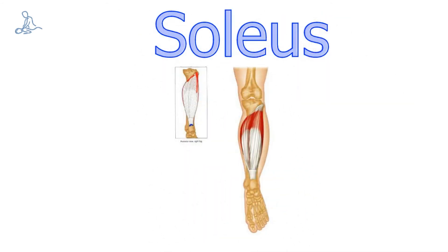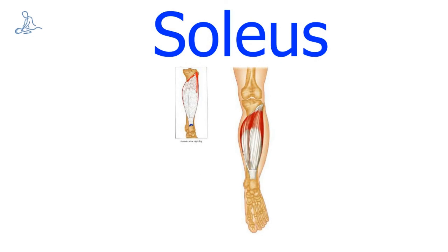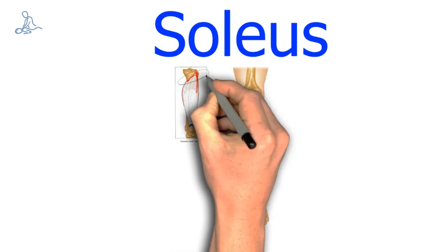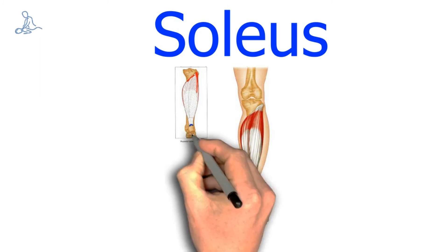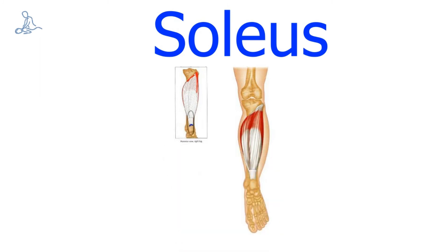Soleus. The origin of the soleus is the superior posterior third of the tibia and fibula. The insertion of the soleus is the calcaneus via the Achilles tendon. The action of the soleus is to plantar flex the foot.